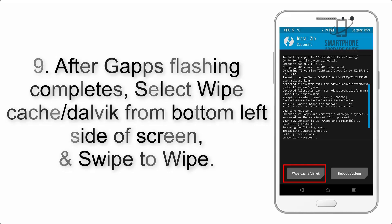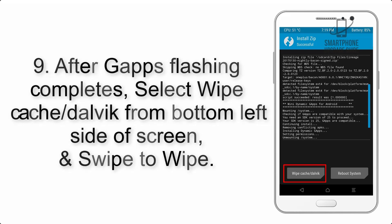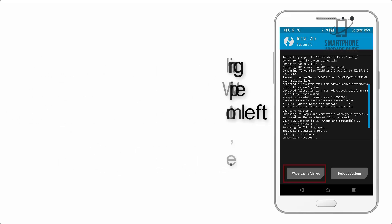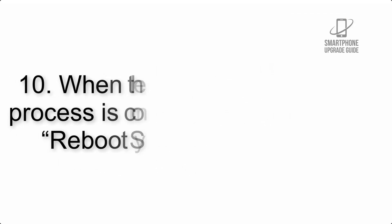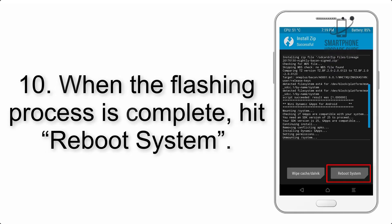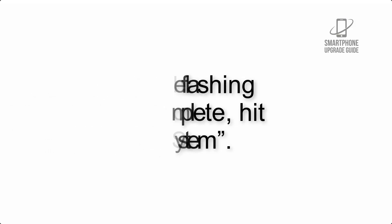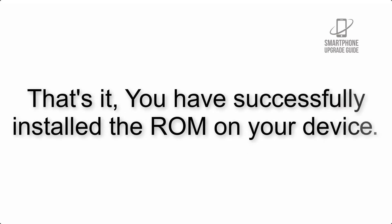Step 9: After GApps flashing completes, select Wipe Cache and Dalvik from the bottom left side of the screen and swipe to wipe. Step 10: When the flashing process is complete, hit Reboot System. That's it — you have successfully installed the ROM on your device.